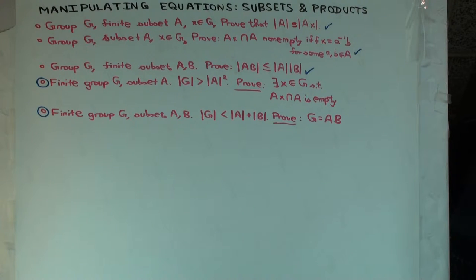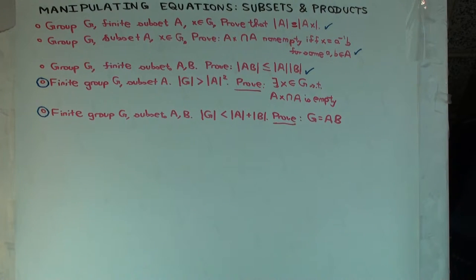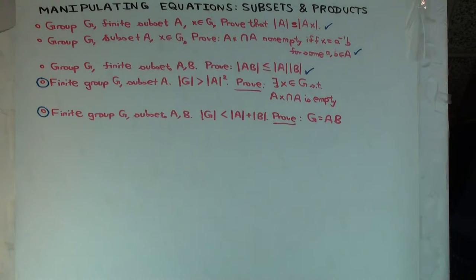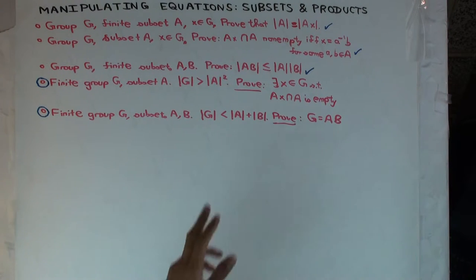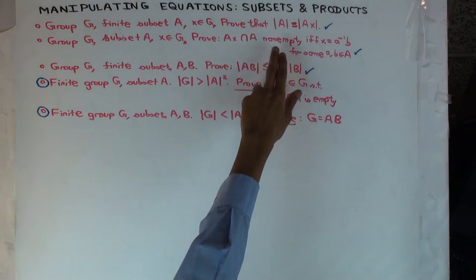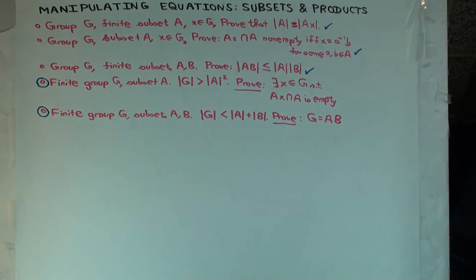Do you have any ideas? How would you use any of the previous ones? I'll show you the second one. So yeah, that seems relevant, because it's giving you the condition for AX intersect A to be non-empty, which if you just negate that it would give you the condition for it to be empty.